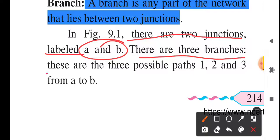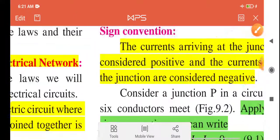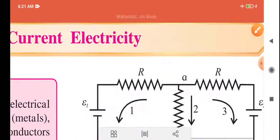In the diagram, there are two junctions labeled as A and B. There are three branches. These are possible paths, the branches are possible paths: one, two, three. Three possible paths. A and B are two junctions, three possible paths.